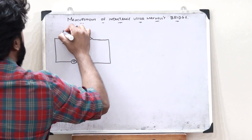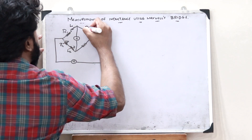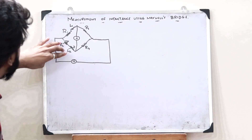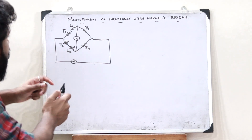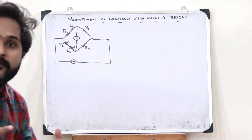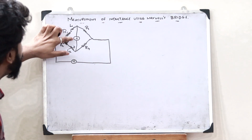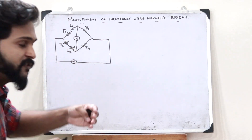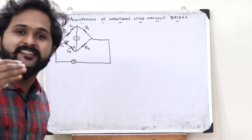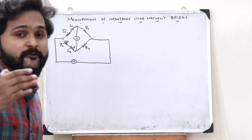Let this be L1 and R1, this be R2 and L2, this be R3, and this be R4. Now we change the value of this particular resistance and inductance, and we observe some deflection in the galvanometer. But when we obtain a balanced condition, there will be no deflection of the galvanometer.